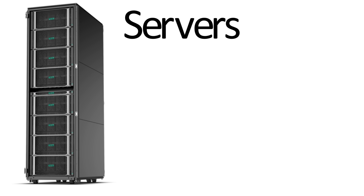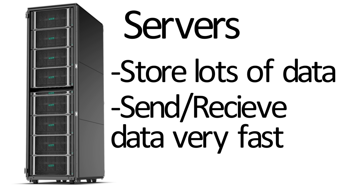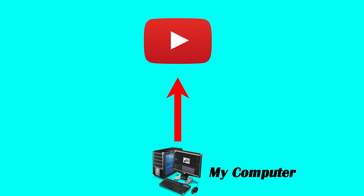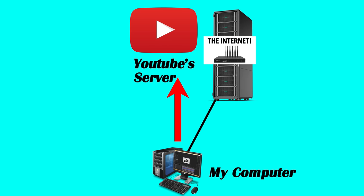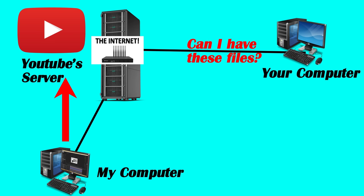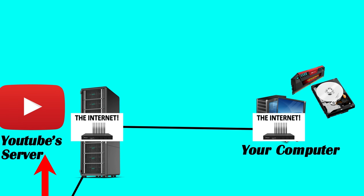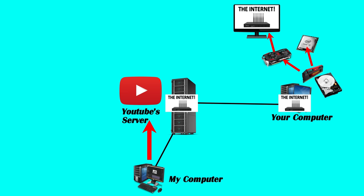Take, for example, the video that you're watching right now. I made this video on my computer and then uploaded it to YouTube. When I uploaded it, the data composing this video was sent to a server owned by Google. When you clicked on this video, your computer sent a request across the internet to the computer where this video was stored, which then sent the data back across the internet to your computer, where it's stored in your RAM sticks and possibly in temporary files on your hard drive. Once in your RAM, the other parts of your computer use that data to create the video and audio on your screen. This process of temporarily storing the video data in your RAM sticks is known as streaming.